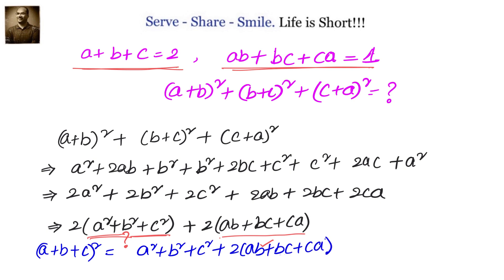The identity says (a+b+c)² equals a² plus b² plus c² plus 2(ab plus bc plus ca). We can leverage this and write that a² plus b² plus c² equals (a+b+c)² minus 2(ab plus bc plus ca). We know ab plus bc plus ca equals 1 and a plus b plus c equals 2.